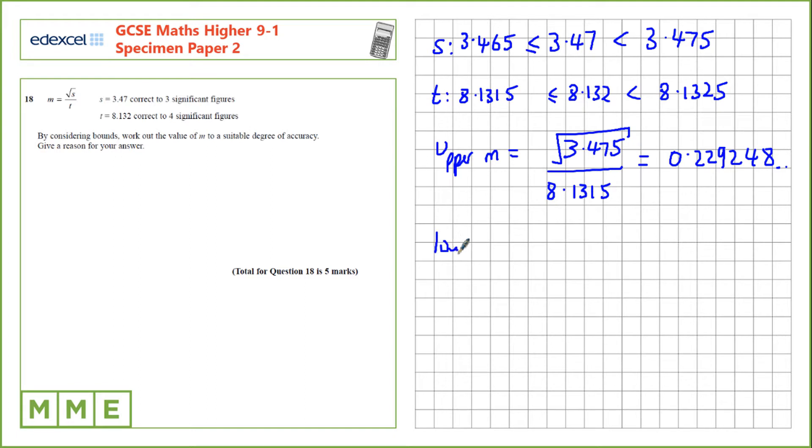Let's do the same, but for the lower bound of m. If you want the lower bound, we want to select the smallest number for the top of the fraction and the largest number for the bottom of the fraction. So, the smallest value of s is this bound here, 3.465.